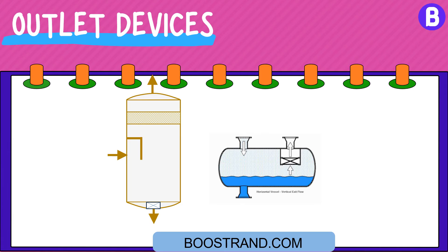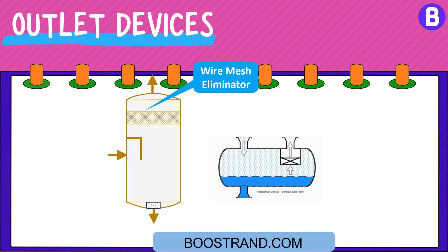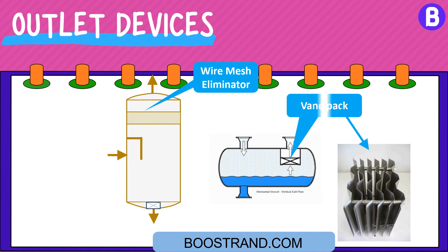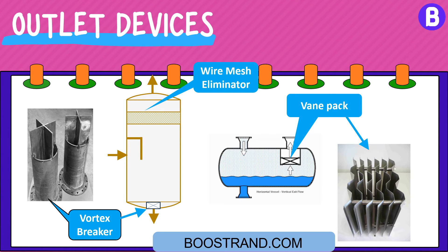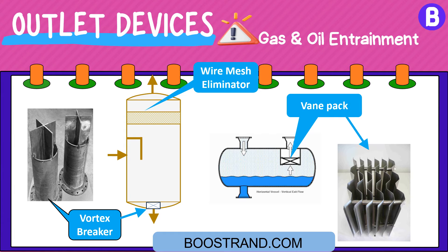Outlet devices are usually installed on the vapor outlet to eliminate liquid entrainment as much as possible. This can be done through several devices such as wire mesh demisters and vane packs. For the liquid outlet nozzle, API 12J states that a vortex breaker may be located to prevent gas or oil entrainment with the bottom liquid.